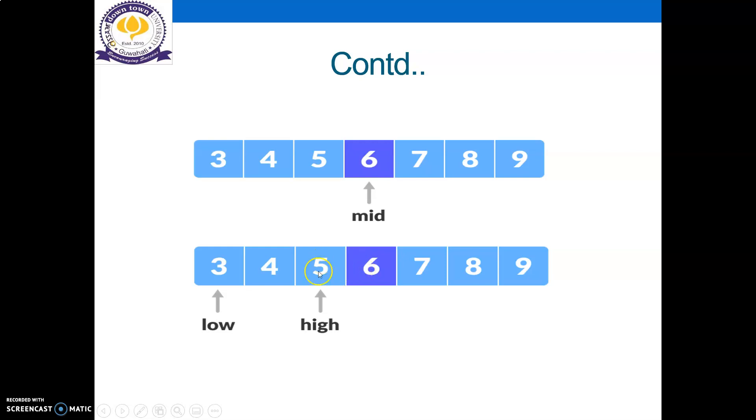So six is the middle position. Now we can see that four is less than six, so we have to consider only the array which is lesser than the value of six, that means the left-hand side portion. And this portion, that is seven, eight, nine, array will be discarded.